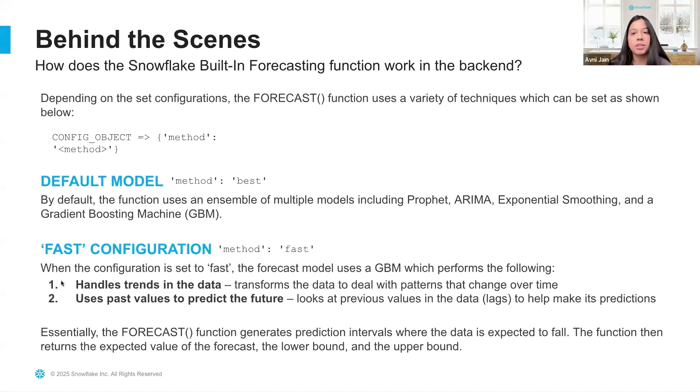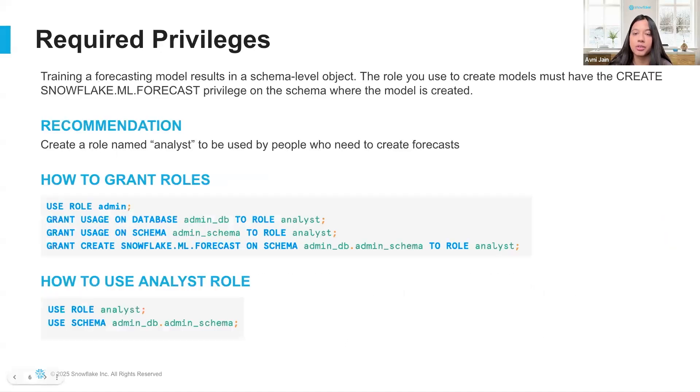Now let's talk about some of the required privileges you'll need to run forecasting. For forecasting, you must have the Create Snowflake ML forecast privilege on the schema where the model is being created. The general recommendation is to have an analyst role which would be used by the people who actually need to create the forecasts. You can grant roles by running the following grant usage commands and then to use the analyst role all you would need to do is set the role and set the schema.